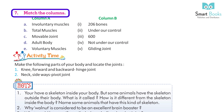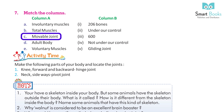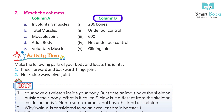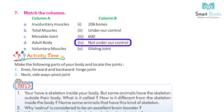Match the columns. Column A: A. Involuntary muscles. B. Total muscles. C. Movable joint. D. Adult body. E. Voluntary muscles. Column B: 1. 206 bones. 2. Under our control. 3. 600. 4. Not under our control. 5. Gliding joint.